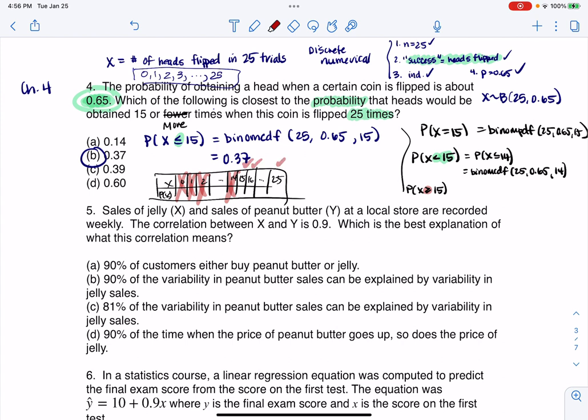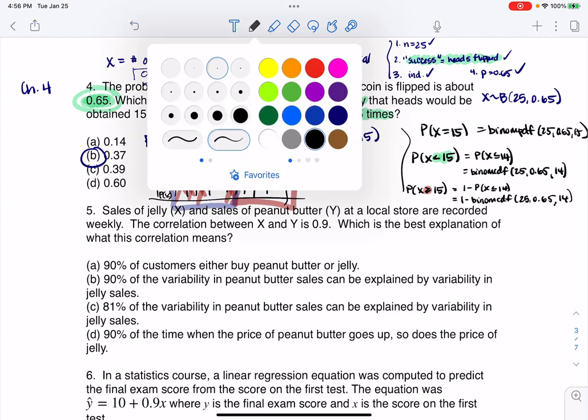So I can use the complement rule. This is one minus the probability that X is less than or equal to 14, so I could subtract out that binomial CDF if I wanted to. And I just wanted to give you guys some tweaks on how that question could pop up.